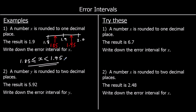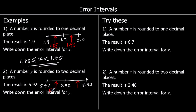So it's between 1.85 and 1.95 — it can equal 1.85 but it can't equal 1.95. Another example: a number y is rounded to two decimal places, we've got 5.92 — write the error interval. The one up is 5.93, the one back is 5.91, so our number could have been anything between the two halfway points: 5.915 and 5.925. So y is bigger than or equal to 5.915 and less than 5.925.